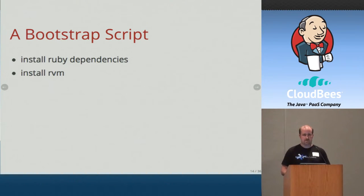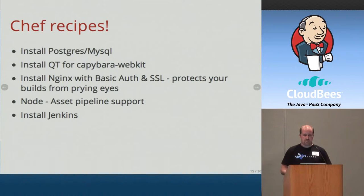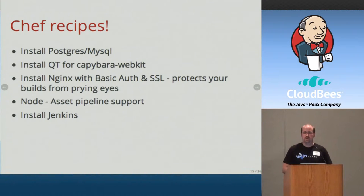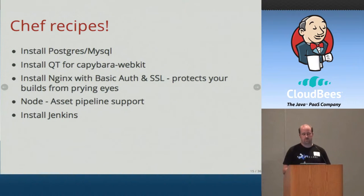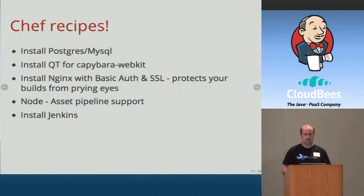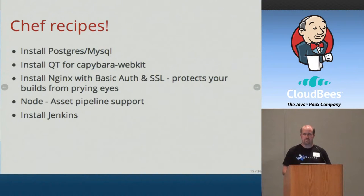We use Chef Solo — there's a whole body of work that is Chef Server with a lot of complexity you don't need for managing a couple of boxes. Chef Solo just requires Ruby on the box. We upload the recipes to the box and start installing things you'll need for a CI environment: Postgres or MySQL, QT for Capybara WebKit for headless Selenium testing, and Nginx. Installing Nginx is important — the temptation is to just open up port 8080 and start hitting Jenkins directly, which if you're hosting in a public location is not a great idea.